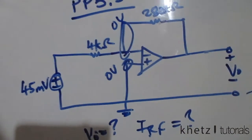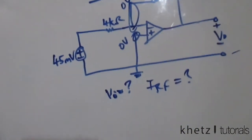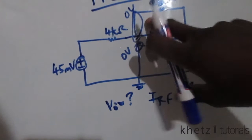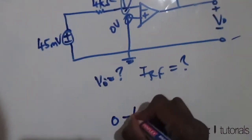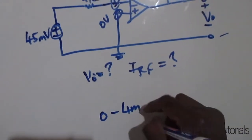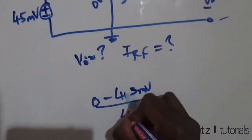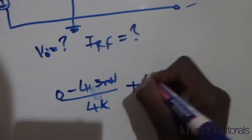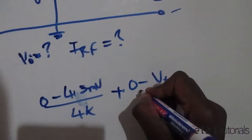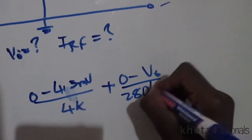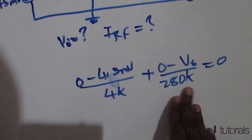Because the terminal voltages are equal, now doing node analysis at this node we have zero subtract 45 millivolts divided by 4k plus zero subtract Vo divided by 280k equals zero. Now multiplying through by 280k...